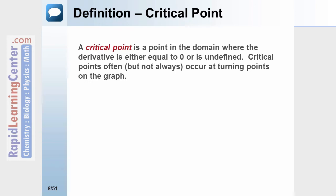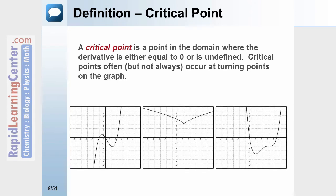A critical point is a point in the domain where the derivative is either equal to 0 or is undefined. Critical points often — but not always — occur at turning points on the graph. Let's take a look at these three graphs below.